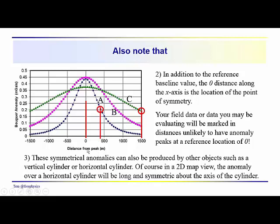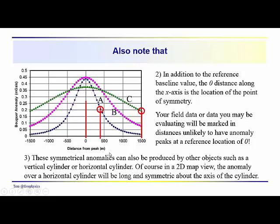Obviously a vertical cylinder would be another object that could produce this type of anomaly. But as you get towards the surface, you could have lens-shaped density contrast that would produce these symmetric anomalies. And another point to consider is that field data are usually noisy, as we mentioned before. You're going to have errors in the different corrections that you make. You're going to have to take that into consideration when you do your analysis. We've been talking about the x_1/2 location.